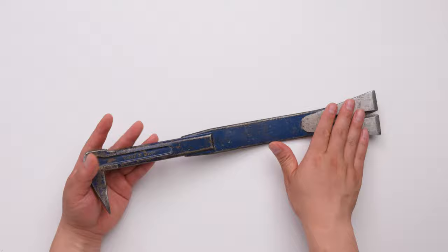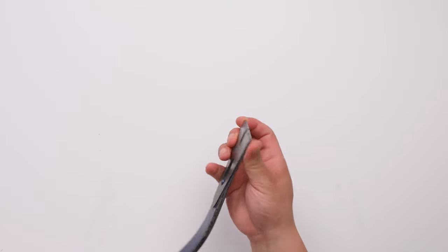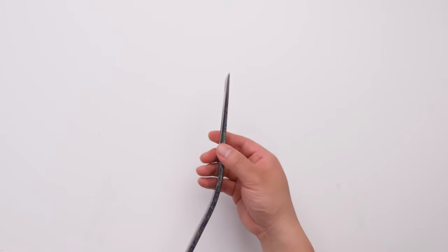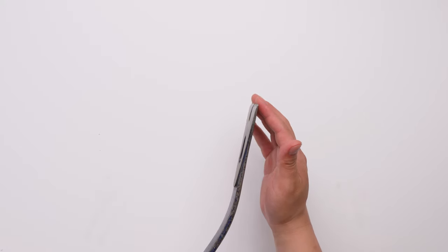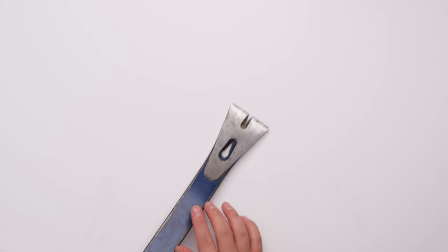First one is pry. For this one, you see this very thin edge. It's good for siding and roofing. Also, it's good for narrow places, so you can put this one in.